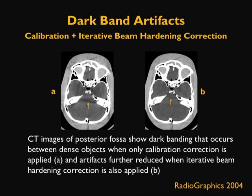Here is another type of beam hardening artifact: the dark band artifact. This is largely eliminated by applying proper calibration plus iterative beam hardening correction. This image of the posterior fossa shows dark banding occurring between dense objects as indicated by the yellow arrow. When only calibration correction is applied, the dark band is still visible — without calibration correction it would be even worse due to blurring and streak artifacts. Calibration correction eliminates the blurring and partially reduces the dark band, but dark bands still exist between dense objects. On image B, that dark banding is eliminated when iterative beam hardening correction is applied.